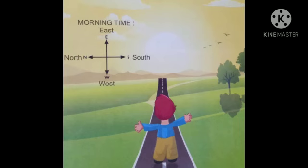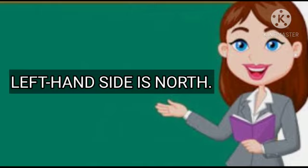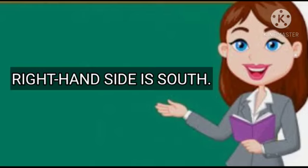Now children, keep both your hands straight like the boy in the picture. While facing towards the sun in the morning, keep your hands like shown in the picture. Your left hand side is called North. I repeat, your left hand side is called North. And your right hand side is called South.